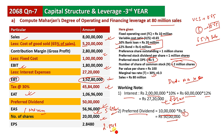EPS is equal to 2.848. Now we will look at the capital structure and leverage: operating leverage, financing leverage, and combined leverage.